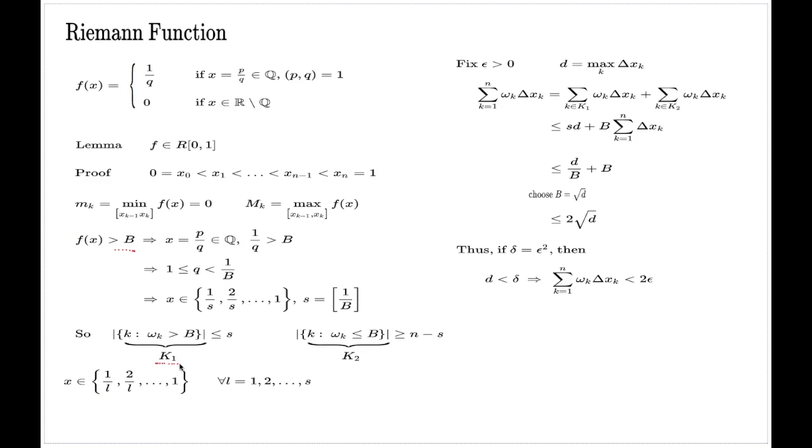Because now we have to re-estimate the number of indices in the set K₁. This time, rather than saying that the number of indices in K₁ is controlled by S, we say that the number of indices is controlled by the number of elements in each of these sets for every L from 1 to S, so it will be 1 for L equals 1, 2 for L equals 2,